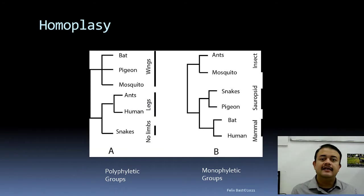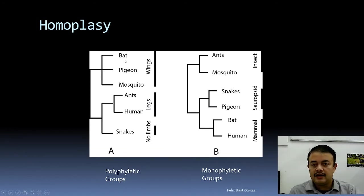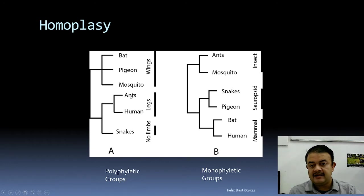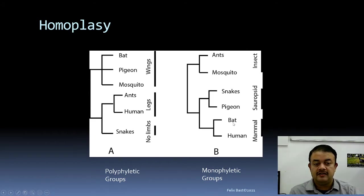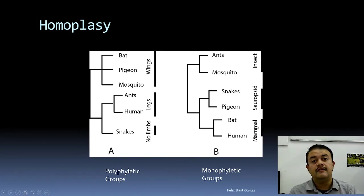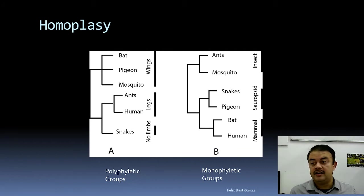Another example of homoplasy: bat, pigeon, and mosquito all have wings — that would be a polyphyletic grouping. Ants and humans with legs, and snakes with no limbs, illustrate another case. In contrast, grouping by insects, sauropsids, and mammals gives monophyletic groups. Homoplasy is a major problem in phylogenetic assessment.